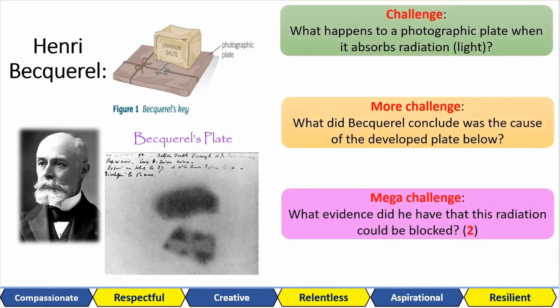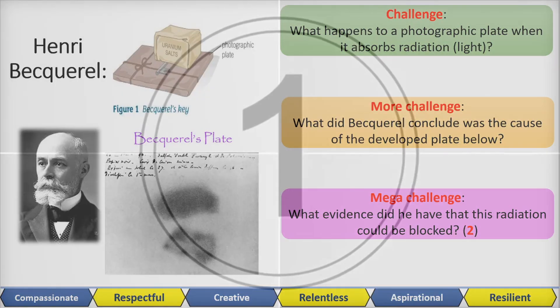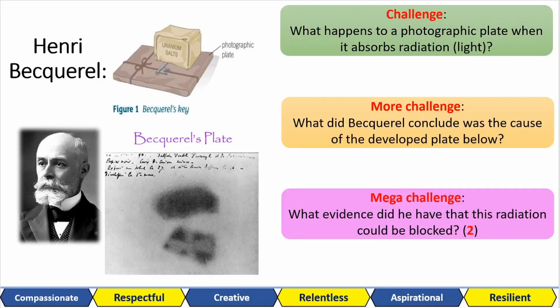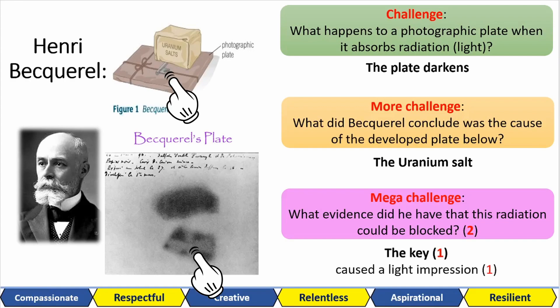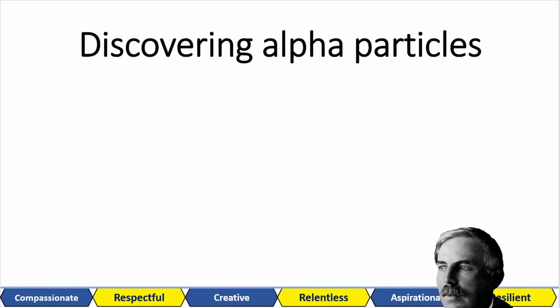Have a go at these challenge questions based on the images that you see here. The photographic plates darken when they absorb light, and light is a form of electromagnetic radiation. Becquerel concluded that it was the uranium salt that was the source of this radiation. You need to understand that this was mad back in the day. It was direct evidence that there was a sort of light that was invisible to our eyes. Not only that, it could move through solid objects. Finally, the evidence that this invisible radiation could be blocked was the imprint of the key, which clearly blocked some of that radiation.